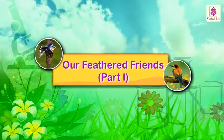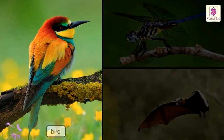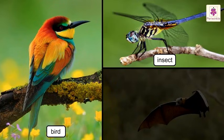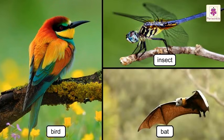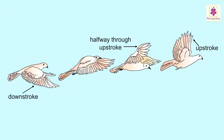Our feathered friends, part 1. Birds, insects, and bats are the only three groups of animals that have the ability to fly. They are able to flap their wings and lift their bodies up and through the air.